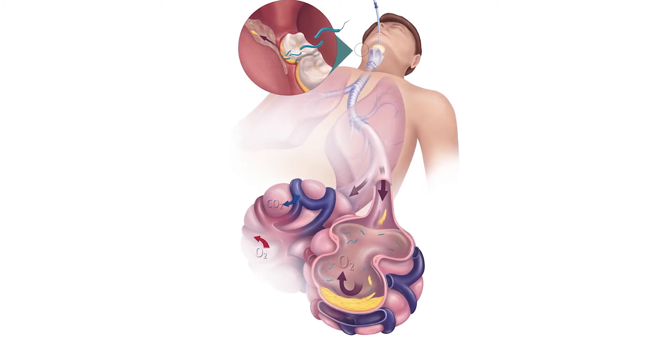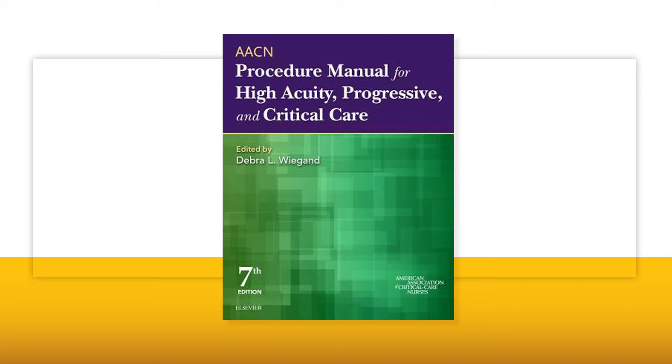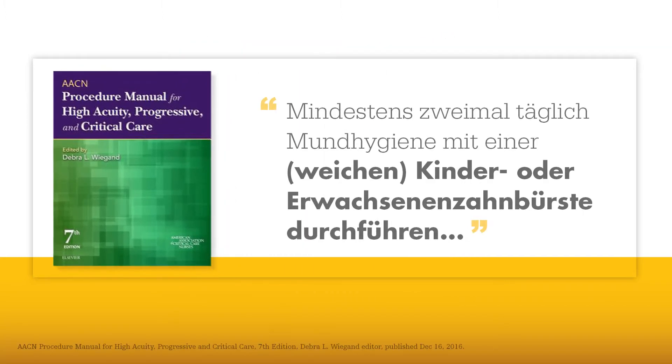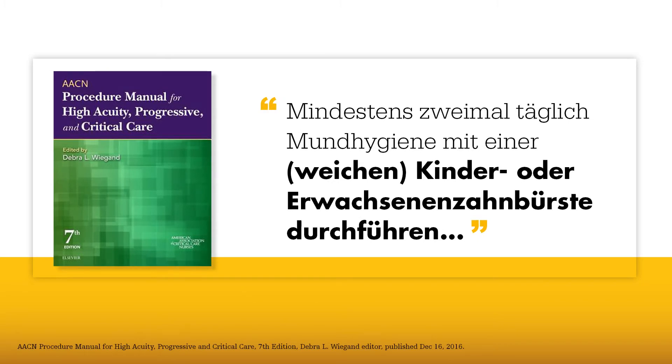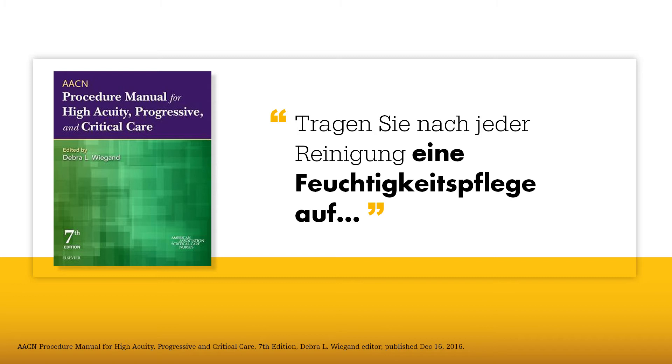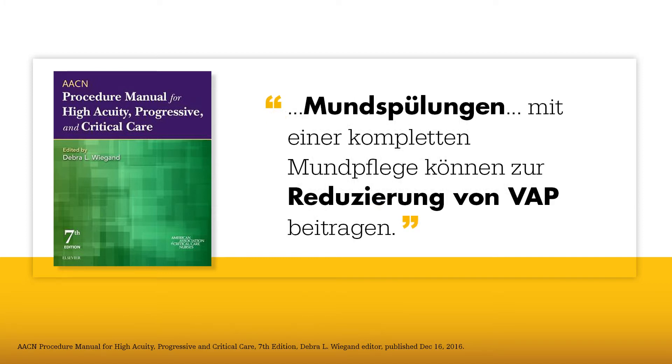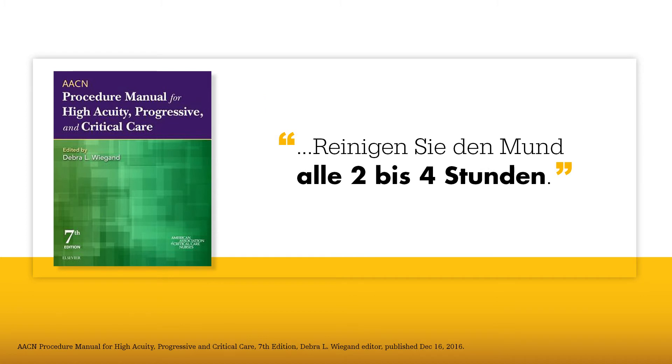These common risk factors can put your ventilated patients at risk. The AACN procedure manual for critical care interventions recommends the following ventilator care: initiate oral hygiene with a pediatric or adult soft toothbrush at least twice per day. Gently brush patients' teeth to clean and remove plaque. After each cleansing apply a mouth moisturizer to the oral mucosa and lips to keep tissue moist. Oral rinses added after brushing or done in conjunction with comprehensive oral care can help reduce VAP. Clean mouth every two to four hours.